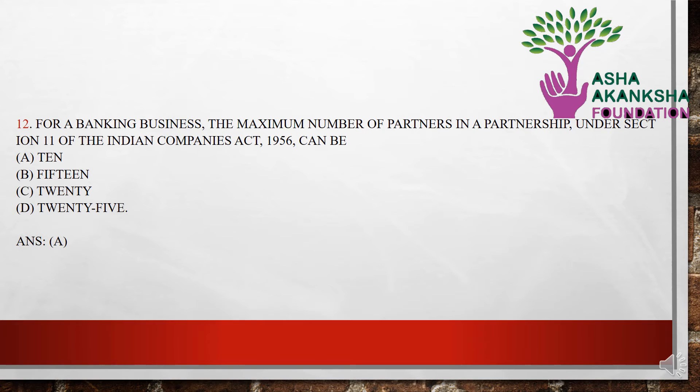The next question is: for a banking business, the maximum number of partners in a partnership under Section 11 of the Indian Companies Act 1956 can be — (a) 10, (b) 15, (c) 20, or (d) 25. The correct answer is option A — the maximum number of partners in a banking partnership under Section 11 of the Indian Companies Act 1956 can be only 10 members.